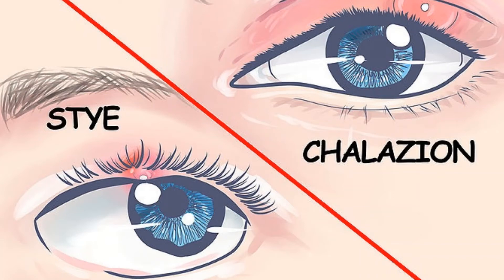Hi everybody. Earlier I posted a video about blepharitis, in which I mentioned some of the complications of blepharitis. Out of these complications, today I am discussing the two complications which are very common, and these are stye and chalazion. This video is about the differences between stye and chalazion — how you differentiate them on clinical examination.